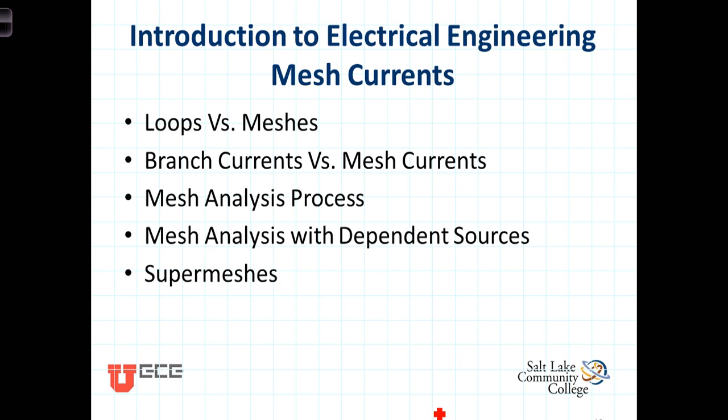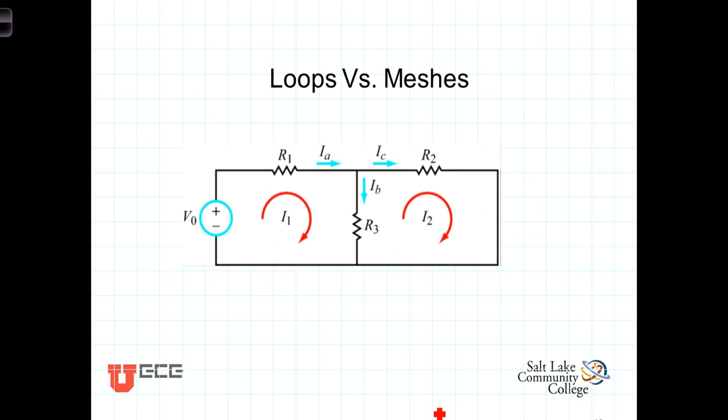First of all, the difference between a loop and a mesh. A loop is any closed path. In this circuit we have a closed path here, a closed path there, and yet one more closed path, so this circuit has three different loops.